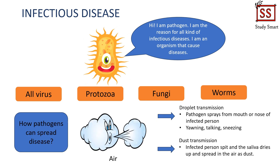The first medium is through air. There are two ways pathogens can transmit disease through air: droplet transmission and dust transmission. Droplet transmission can occur when an infected person yawns, talks, or sneezes. Dust transmission can occur when an infected person spits and the saliva dries up and spreads as dust.